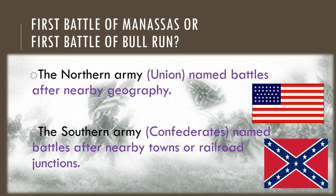So is it called the First Battle of Manassas or the First Battle of Bull Run? This battle has two names, and in fact a lot of Civil War battles have two different names. That is because the Northern Army, the Union, named battles after nearby geography, like rivers and streams, hills and mountains. But the Southern Army, the Confederates, primarily named their battles after nearby towns or railroad junctions, where two railroads crossed.